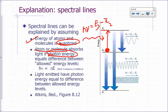If that energy doesn't correspond to E3 minus E2 — let's say it only gives you this much — then it's not going to be absorbed. In other words, atoms and molecules, you can think of them as being picky: either give me exactly what I want or I'm not taking it at all. It has to correspond to the difference between allowed energy levels of the atom or molecule.